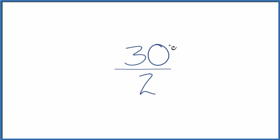If you need to simplify the fraction 30 over 2, also called 30 seconds, here's how you do it.